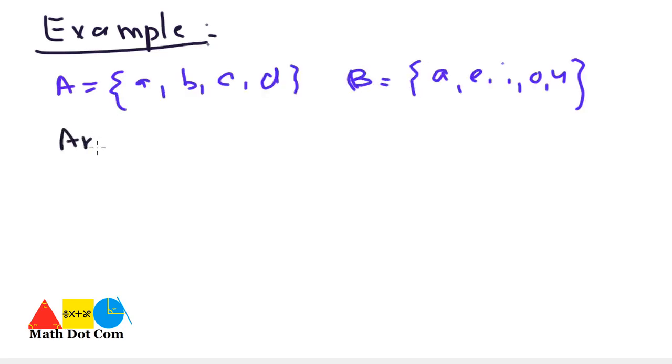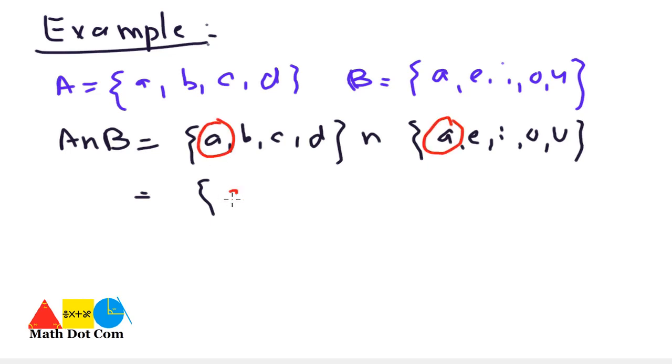Let's explain with an example. We have two sets: A is equals to {a, b, c, d} and B is equals to {a, e, i, o, u}. If you find the intersection, the only element that is common in both is a. So a is the result of A intersection B.